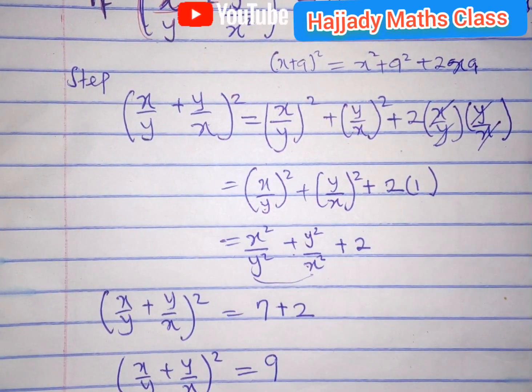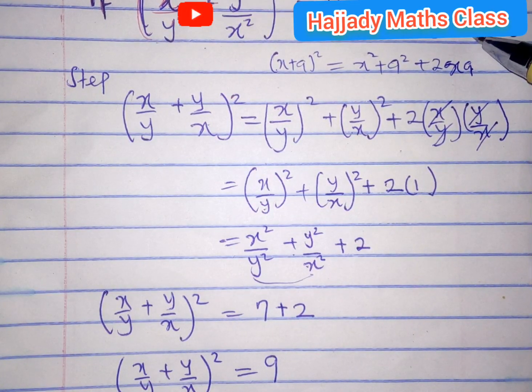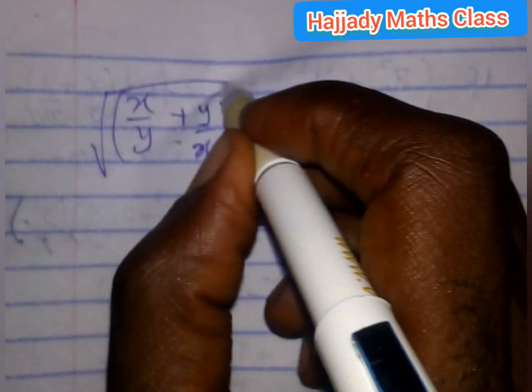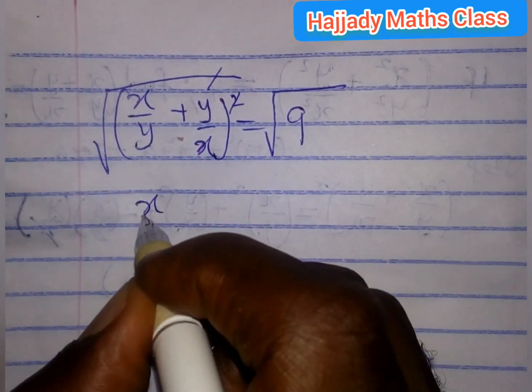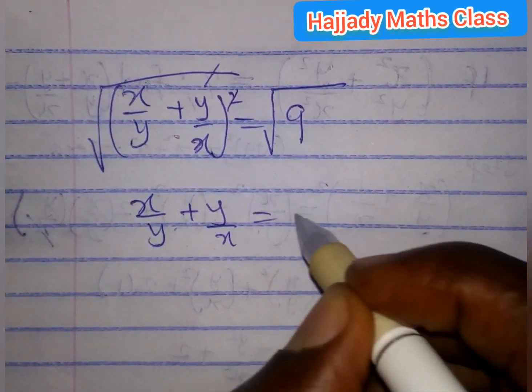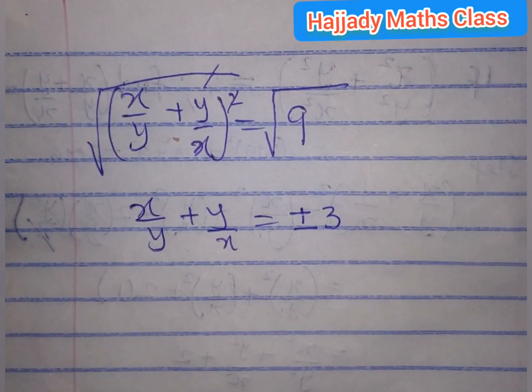And from the question, we are looking for x over y plus y over x. So the next thing for us to do is to square root both sides. This square cancels out this. And finally, we have x over y plus y over x equals plus or minus 3. So this is our final answer.